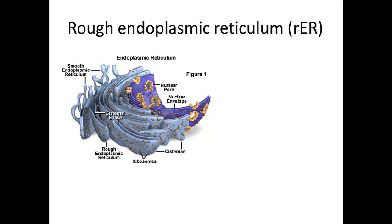Ribosomes are for making proteins. Here is a drawing of the rough ER, and notice how it is attached to the nucleus — the membrane of the nucleus is continuous with the membrane of the ER. If it's studded with ribosomes, it's involved in protein production and it's called rough ER. Over here you have ER that doesn't have ribosomes on it — that's called smooth ER, and that is for lipid production.